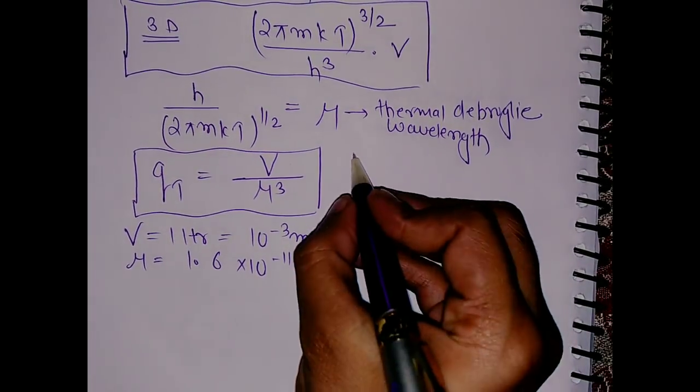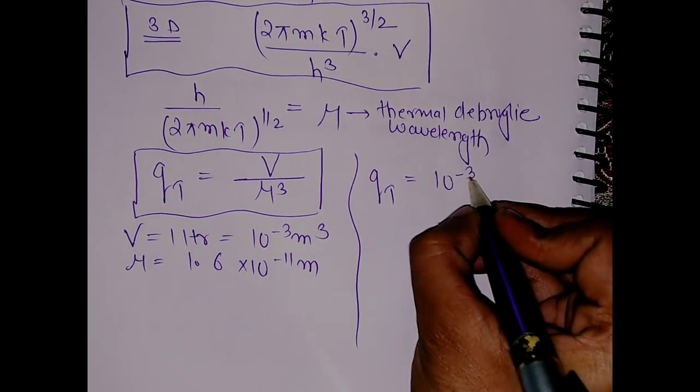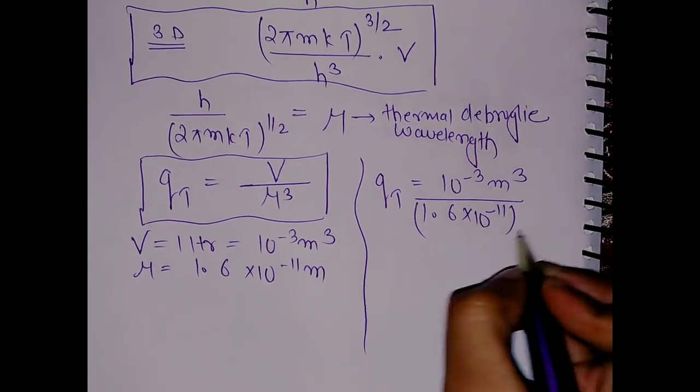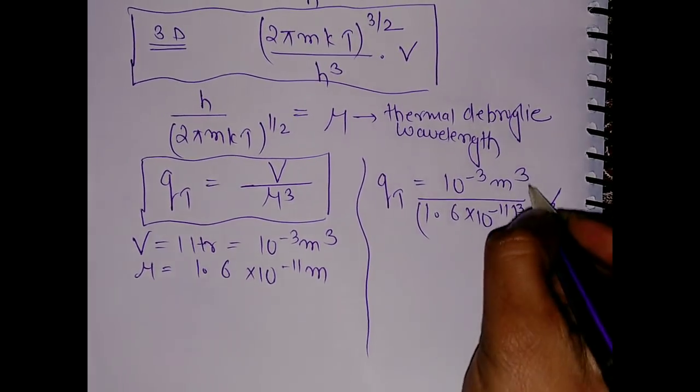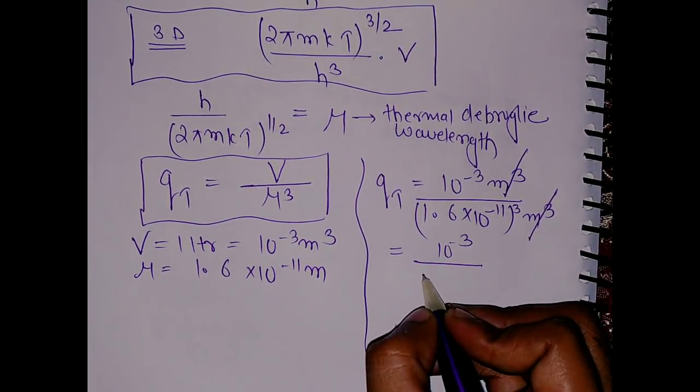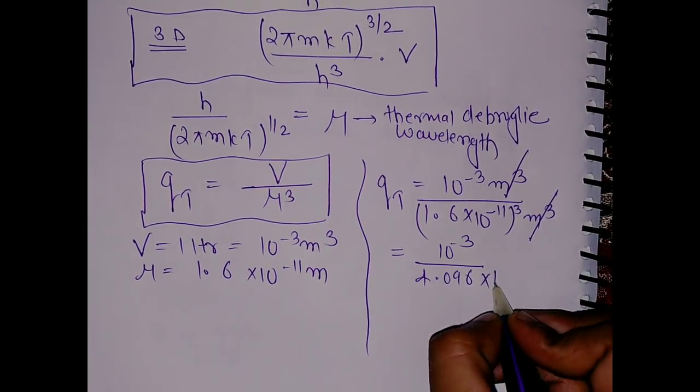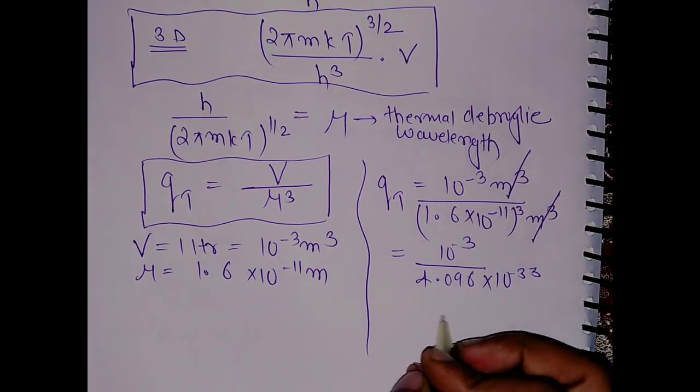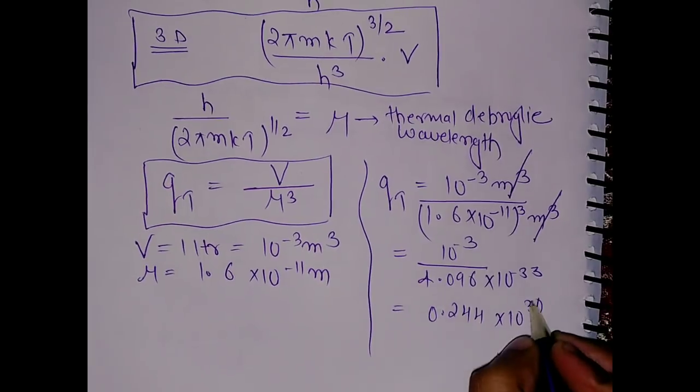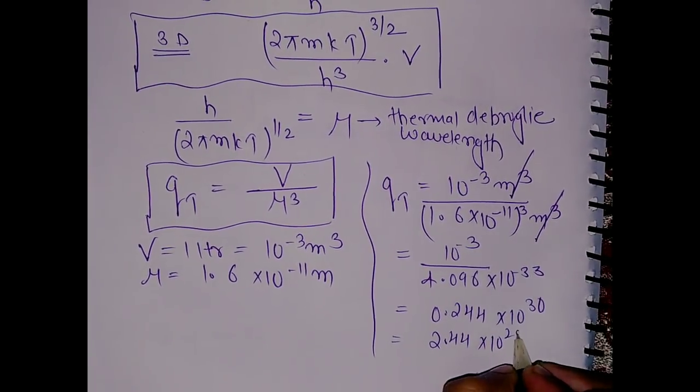The qt will become 10^-3 m³ divided by (1.6 × 10^-11)³. This becomes 4.096 × 10^-33, which is 0.24 × 10^-30. Multiply and divide by 10 to get 2.44 × 10^-29.